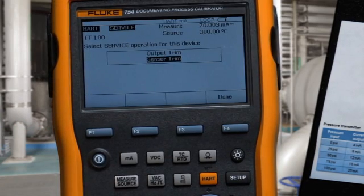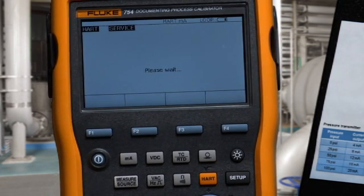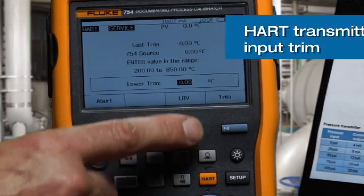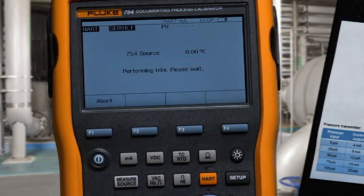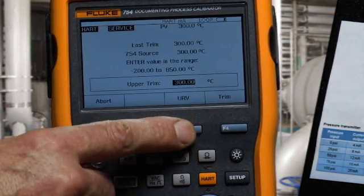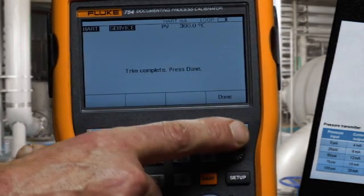Next, we'll perform an adjustment on the input of the transmitter. We're going to trim the lower range value first. Then we're going to trim the upper range value. Adjustment is completed.